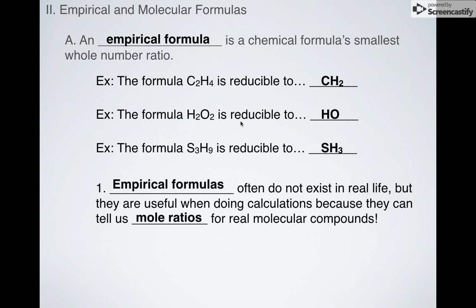So in other words, CH2 doesn't exist. But if I have CH2 as an empirical formula, that gives me the ratio of, for every one carbon, I have two hydrogens. And that's also true of this. For every one carbon, I have two hydrogens. And same thing with this. For every one hydrogen, I have one oxygen.